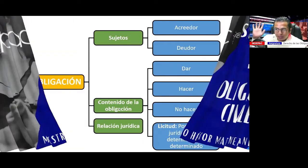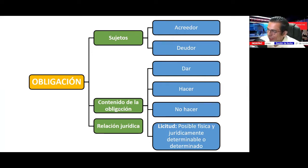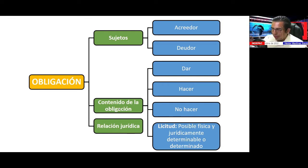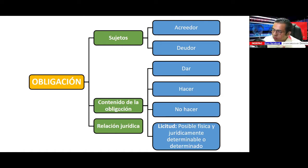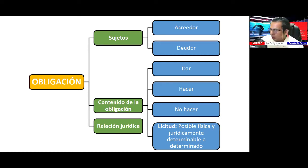Ulpiano, en el digesto romano, decía lo siguiente. En castellano significa: la obligación es el vínculo jurídico mediante el cual quedamos constreñidos de acuerdo al derecho de nuestra ciudad. En la obligación intervienen dos sujetos: el acreedor y el deudor.